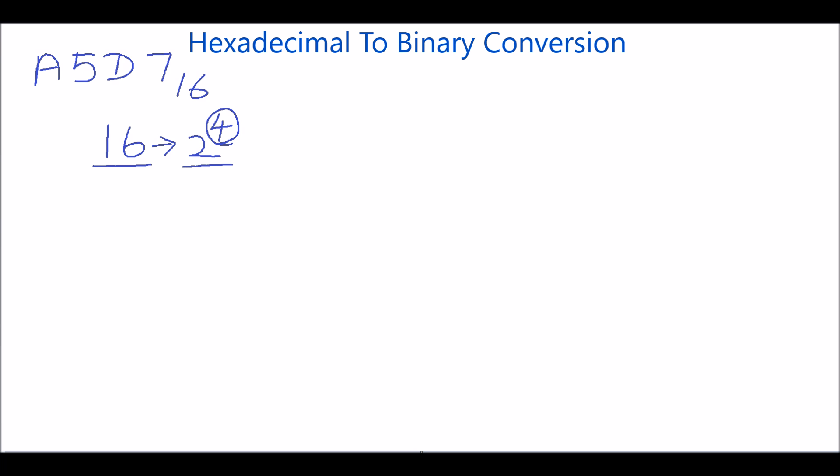Which indicates that the hexadecimal numbers 0 to 9 and A to F can be represented with 4 bits of binary.